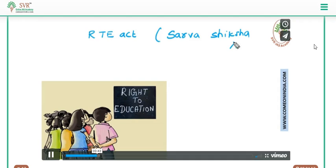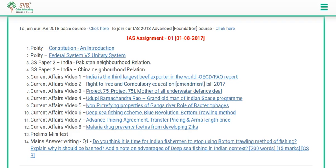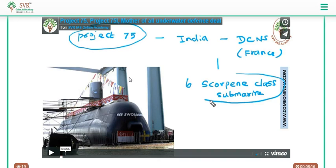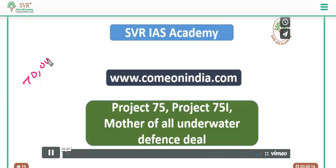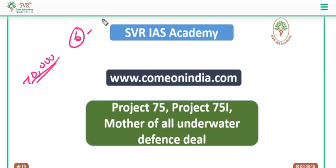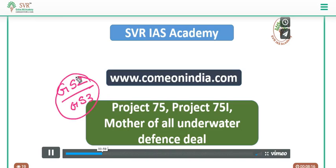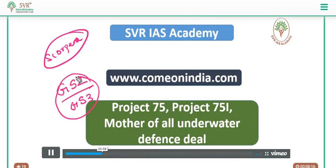The third video lecture published today is about Project 75 and Project 75i, an important topic for the IAS 2018 prelims examination. Recently the government is planning to spend nearly 70,000 crore rupees for purchasing or constructing 6 advanced submarines in India. Project 75 means India signed an agreement with France to purchase 6 Scorpène submarines. Don't forget: Scorpène is a submarine of France that India is purchasing under the Project 75 agreement.